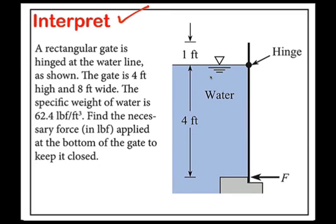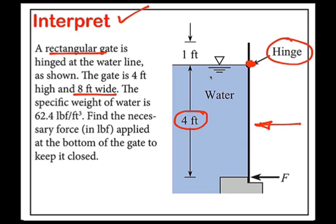I'll start by interpreting the problem. We have a rectangular gate shown here. There's a hinge at the waterline, so the gate pivots around this point. The gate is four feet in this dimension and eight feet wide, so this is like a sheet of plywood. Specific weight of water is given and the goal is the force to hold the gate shut.